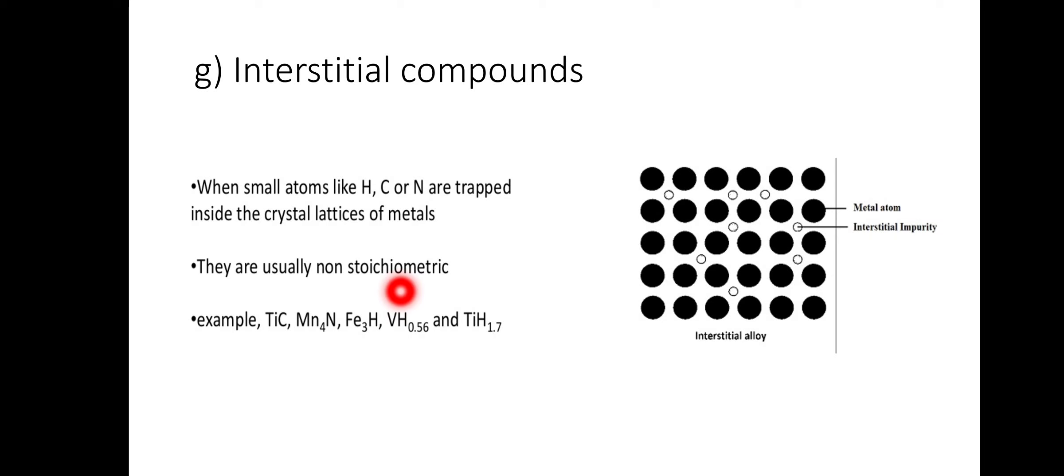For example, titanium carbon, Mn4, NFe3H, and VH0.56. They are hard. They are inert, so they have high melting and boiling points.